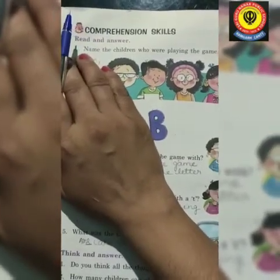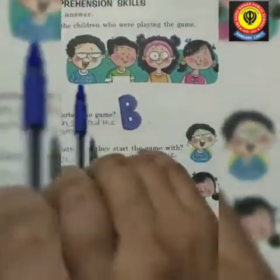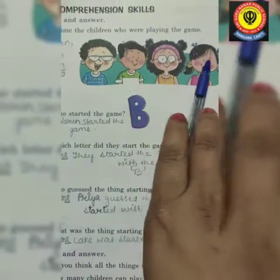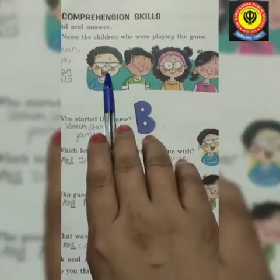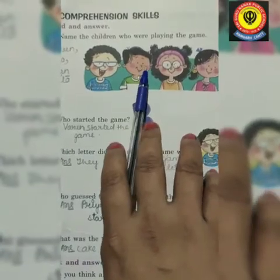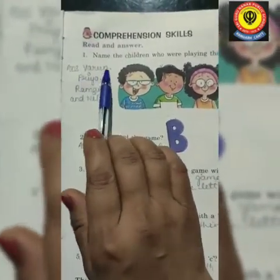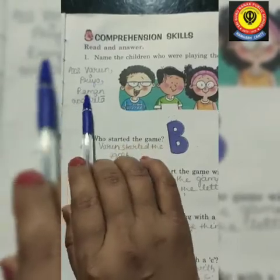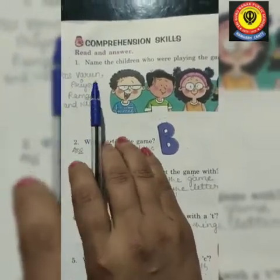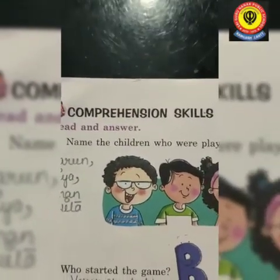Now look at page number 13. It's a comprehension skill. What we have to do here is write the names of the children who were playing the game. There are four children and we have to write their names: Varun, Priya, Raman, and Nita. These children were playing the game in the chapter.